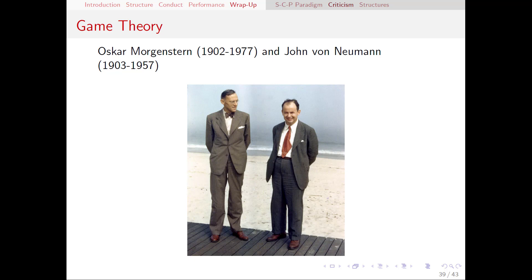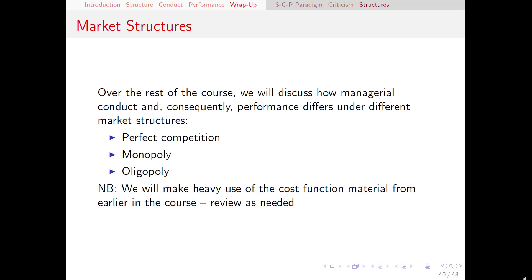Here's a picture of Oscar Morgenstern and John von Neumann, founders of game theory, enjoying a nice day on the beach. Now that we have covered a general framework to think about different markets, we are going to study specific market structures and examine how managerial conduct — mostly in terms of price and quantity — will differ across those market structures, and then consequently how performance will differ, as measured by deadweight loss, total surplus, and firms' profits.